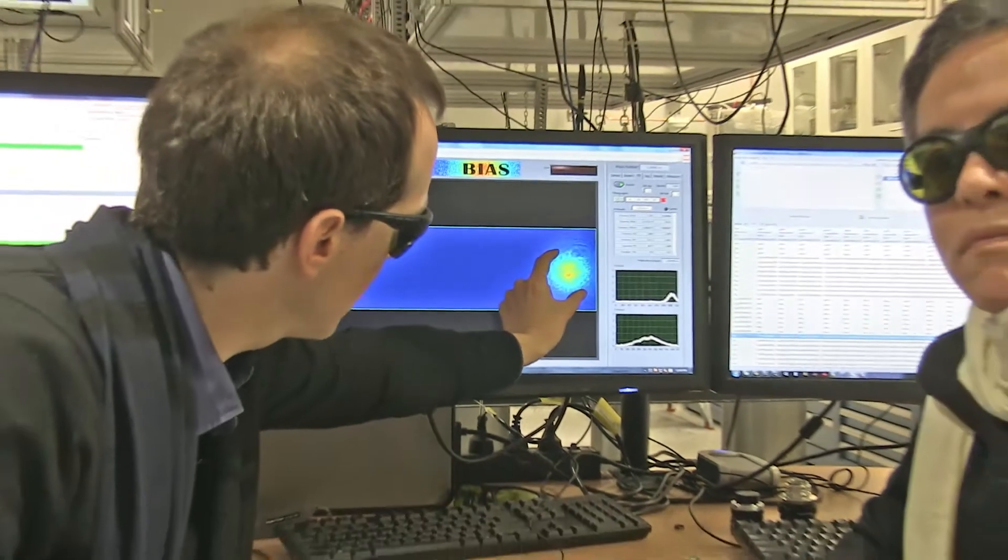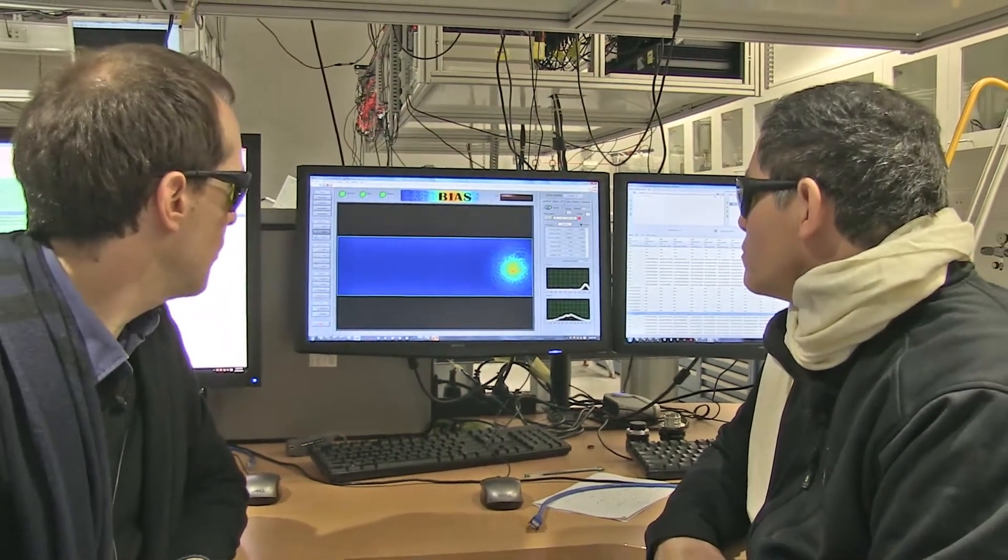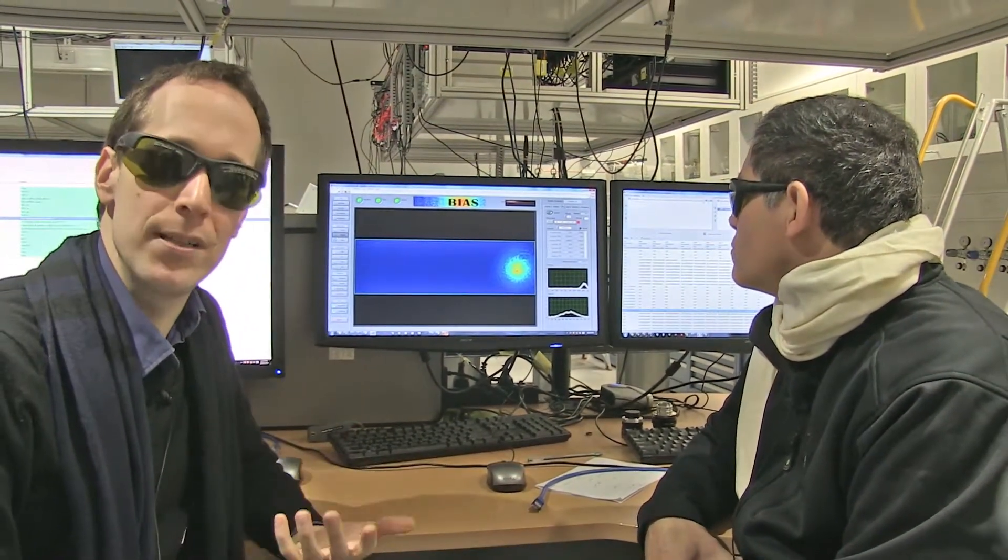And by measuring how big they've got, by measuring this diameter here, we can work out how fast those atoms were bouncing around inside that cloud. And by working that out, we can tell how cold they are.